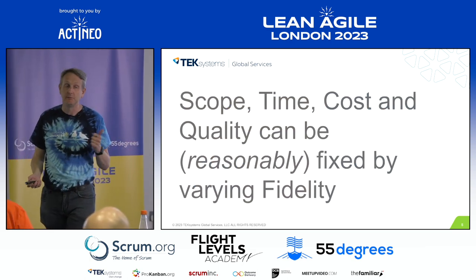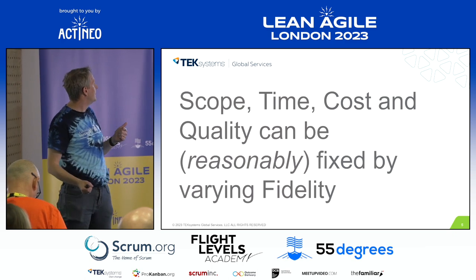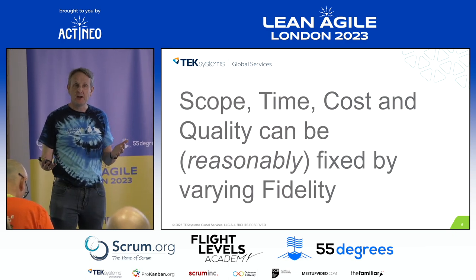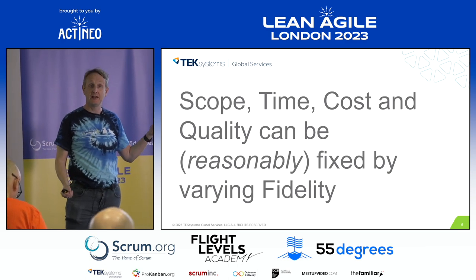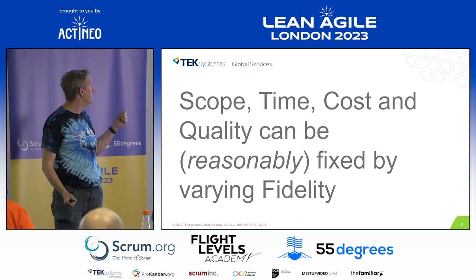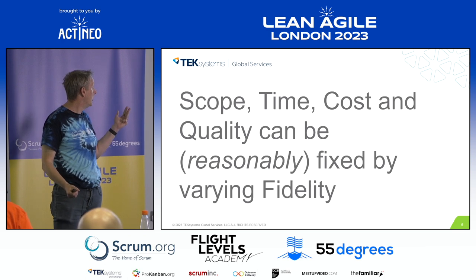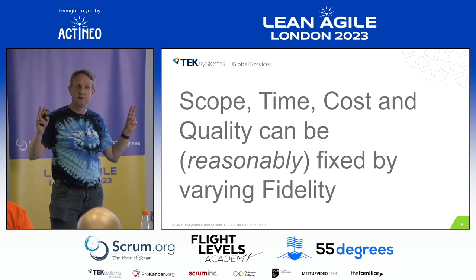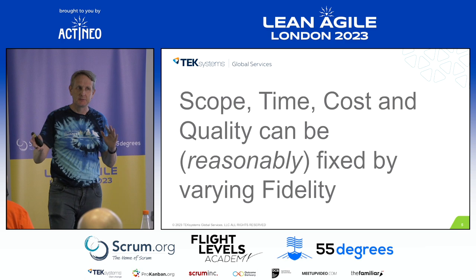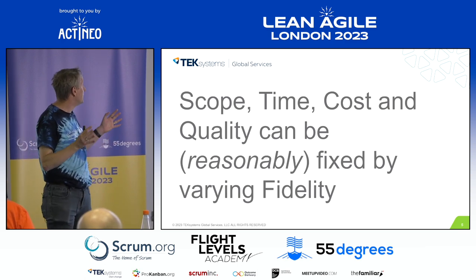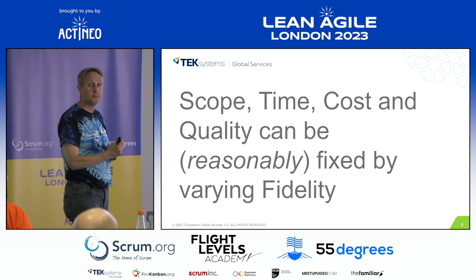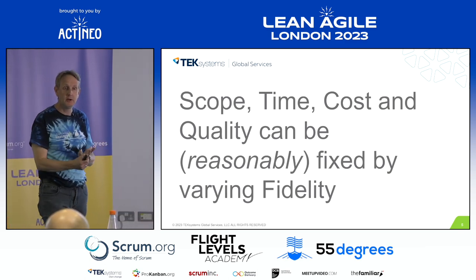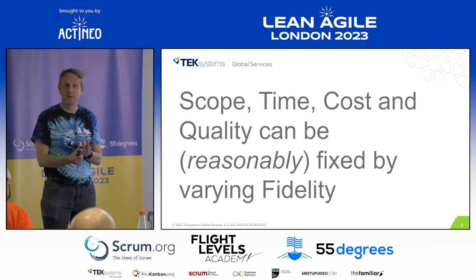I'm going out on a limb here: I think we talk about you can't have all things in the iron triangle, but I think you can. Agile allows us to do that because you can fix scope, time, cost, and quality — reasonably, because if somebody says I want everything by tomorrow, that's probably not reasonable. But fidelity gives you a lever and a dimension to start playing around with, and actually hit the date, hit the scope, hit the cost, and an acceptable level of quality.